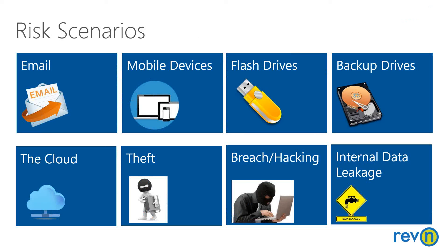Some other possible risk scenarios involve email. Email is a very likely way for data to leave the company — it's easy for somebody to inadvertently include social security numbers, account numbers, or credit card numbers in an email. Mobile devices, laptops, tablets, and smartphones are often lost or stolen, and they often have company information on them. The same goes for flash drives — very easy to misplace, and people who find them can access that information.